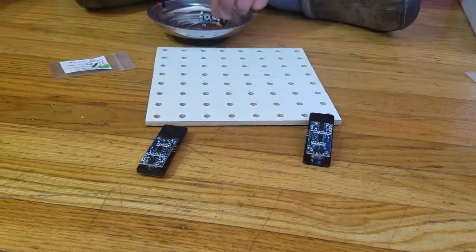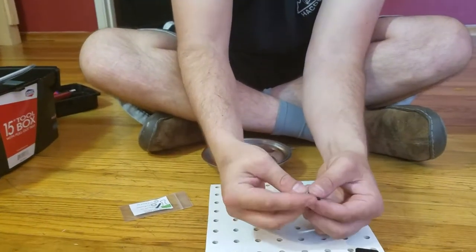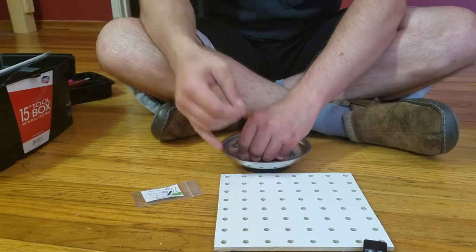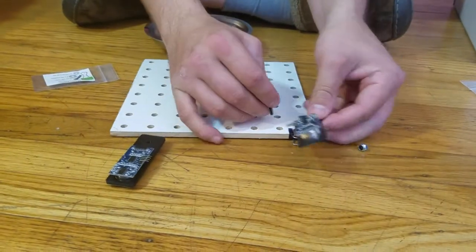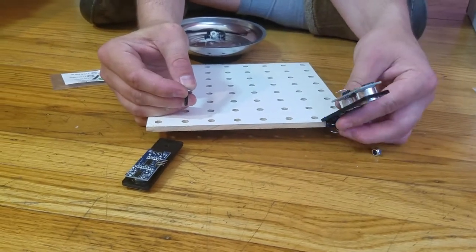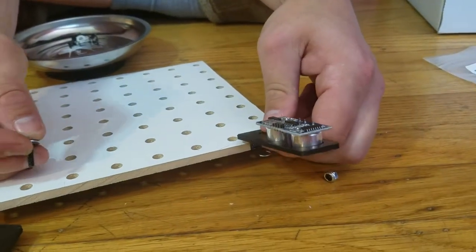Put a washer on it, 6-32 washer, and then we're gonna get the 6-32 lock nut. We're gonna put the binder clip onto the deck and put the plastic sonar holder on top of that.